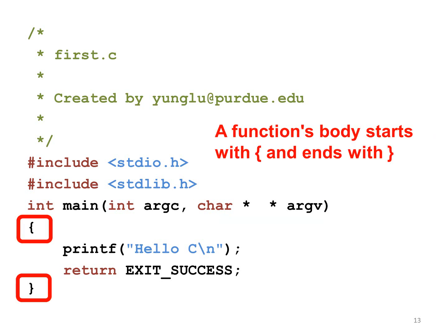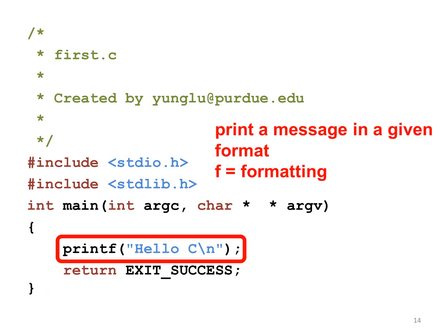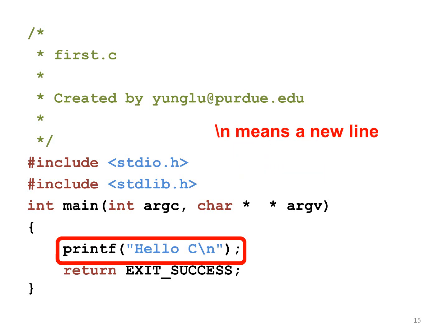Each function in a C program must be enclosed by a pair of braces. Inside the main function, the first statement uses the printf function to print Hello, C. Here, F means formatting. Printf allows you to format the output in several different ways. The ending backslash n means adding a new line at the end of the message.